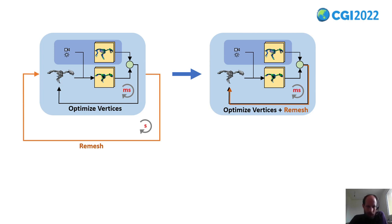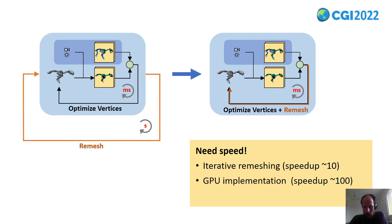We have seen that the classical remeshing can take seconds for large meshes, and the optimization iteration just takes milliseconds. So we need to greatly speed up the remeshing. First, the remeshing is an iterative method, so we can just take one iteration. That gives us a factor of 10. And then we can move everything to the GPU and do it in parallel. That gives us another factor of 100.